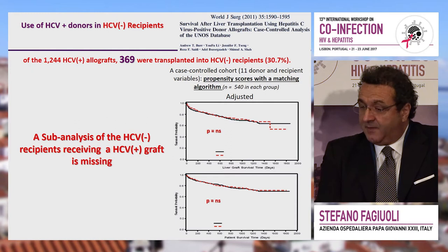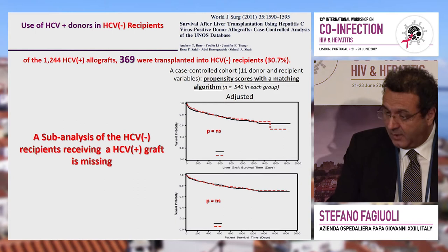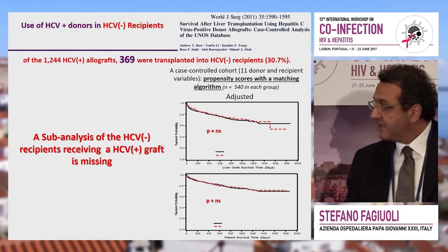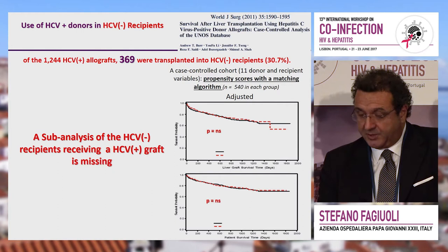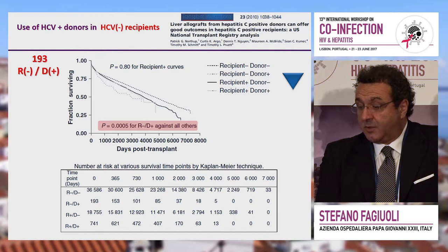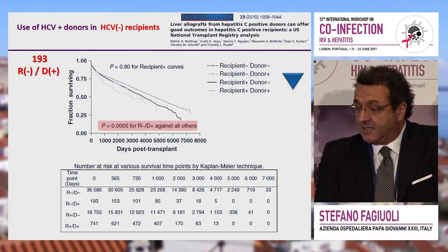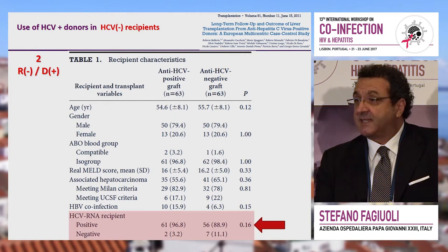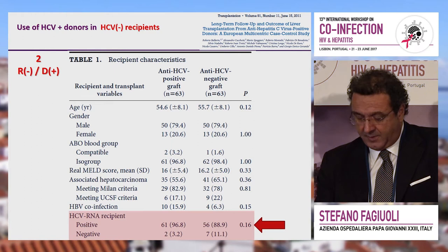It is more interesting to see what happens if we use an HCV positive organ in a negative patient. One study using propensity score adjustment had a large number of patients receiving a positive organ while being negative and found no real difference in survival, but there was no specific subanalysis. A smaller study of 193 HCV-negative recipients of HCV-positive organs showed the mismatched group does much worse — and that is the only study showing this. Again, this is pre-DAA era, and with only two matched patients you cannot have statistical significance for the recording of the disease.